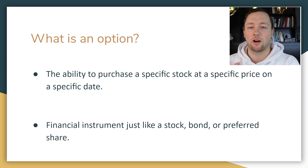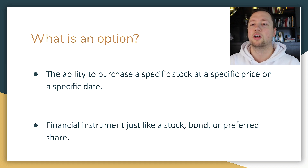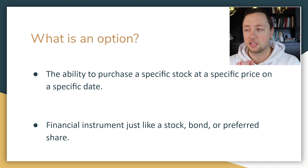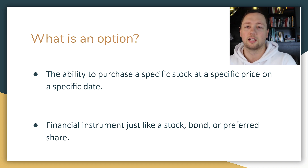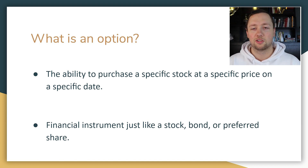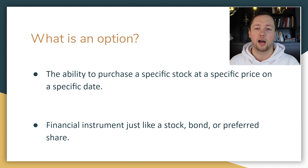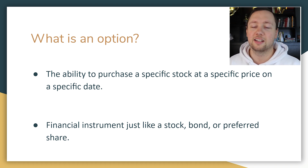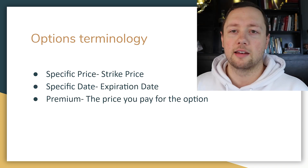So what is an option? Simply put, it is the ability to purchase a specific stock at a specific price on a specific date. An option is a financial instrument that can be traded just like a stock, a bond, or a preferred share. There is a market for it — you can buy and sell it — and it is a financial instrument just the same as any other.